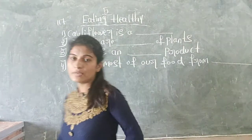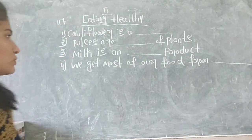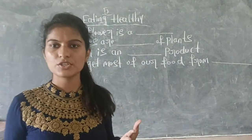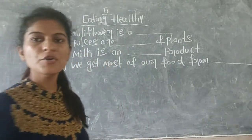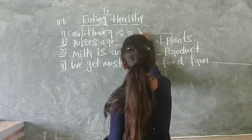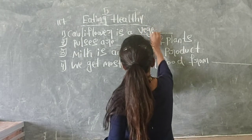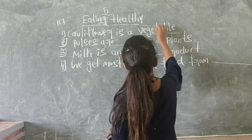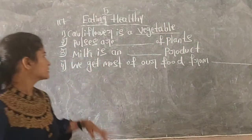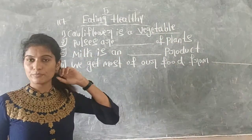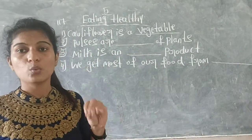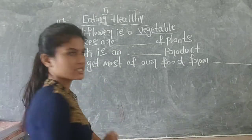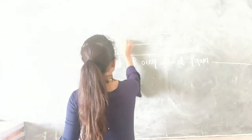So the first one: cauliflower is a blank — is it a fruit or a vegetable? Cauliflower is a vegetable. The second one: pulses are blank of plants — which part of the plant are pulses? These are the seeds.